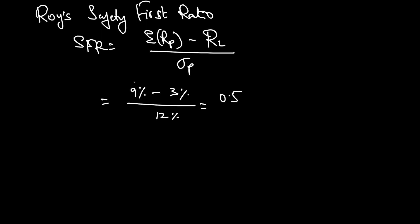What does this mean? The expected return minus the return of the threshold level gives you the premium — the additional returns based on the standard deviation. How do you decide the threshold level? That is dependent upon the client. The client can decide the threshold level as the risk-free rate, or 0% can also be decided as the threshold level.